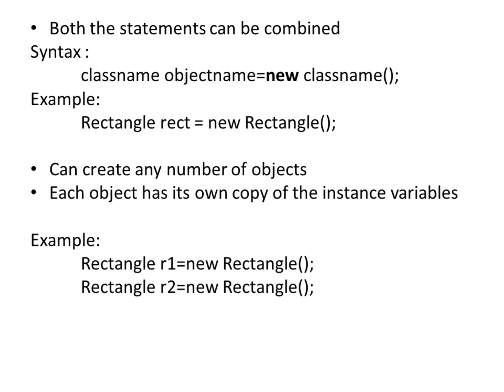Within each object, there will be memory for the instance variables. Object 1 will have its own memory for the instance variables, and object 2 will have separate memory for the instance variables. In this example, r1 is one object and r2 is another object. r1 will have the memory for length and width, and in the same way r2 will also have its own memory for length and width.